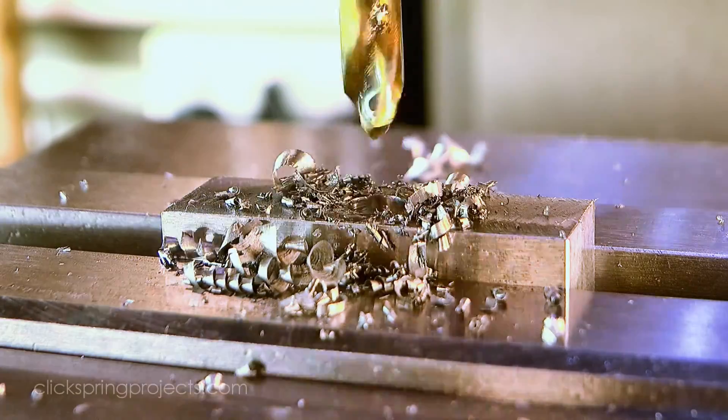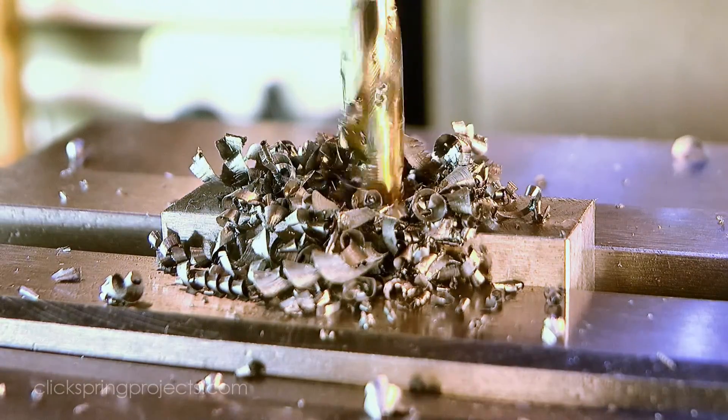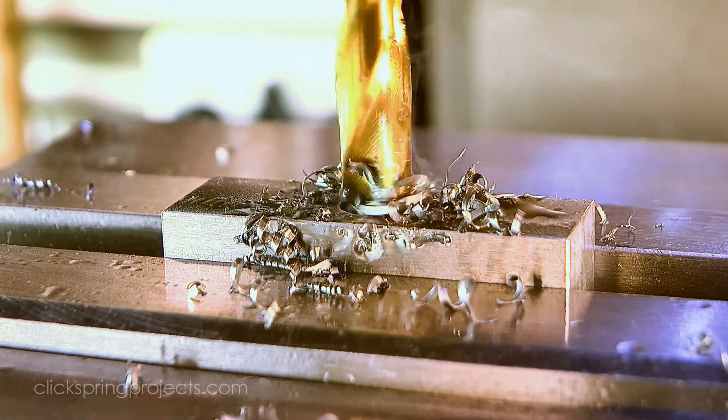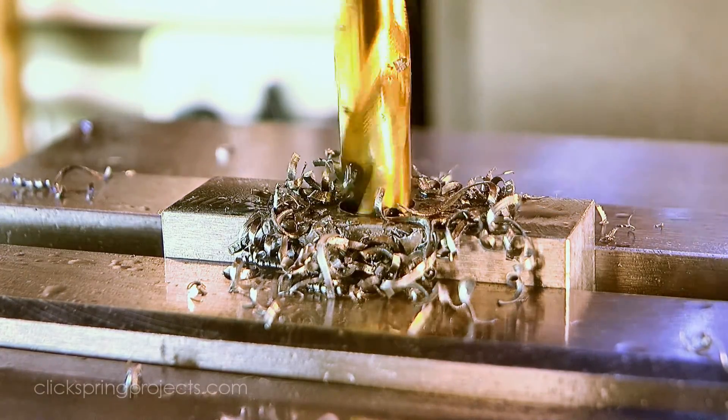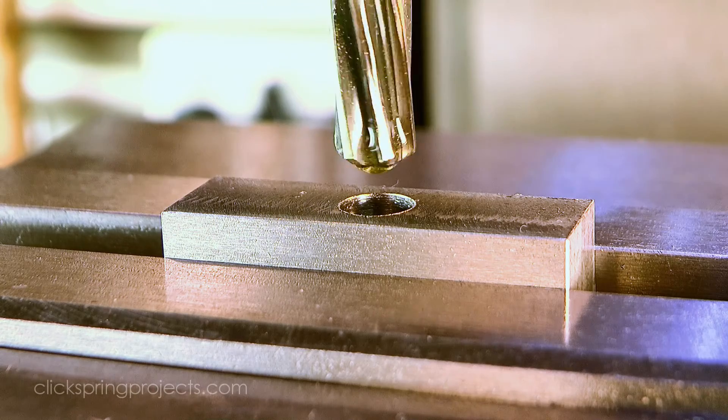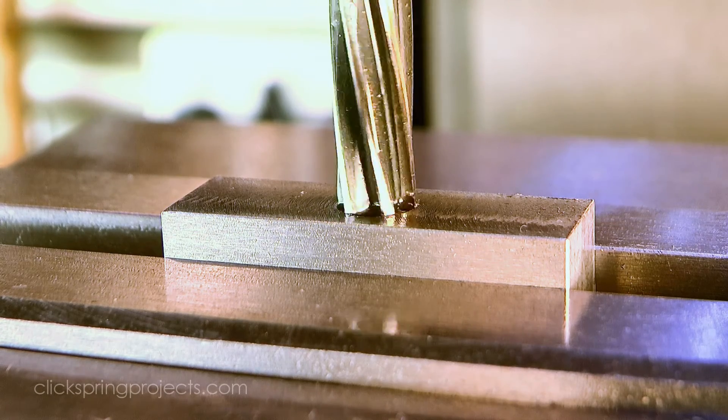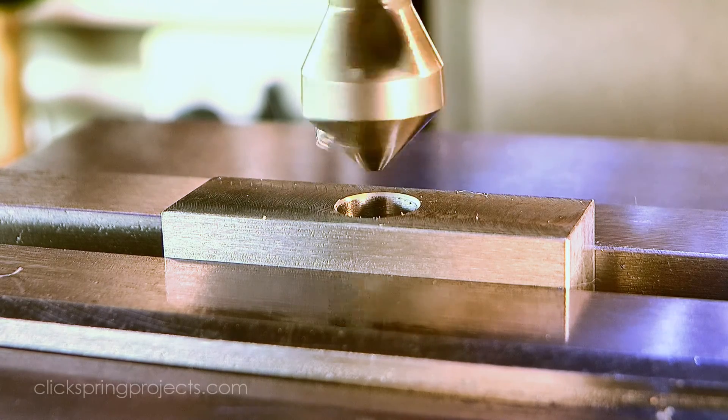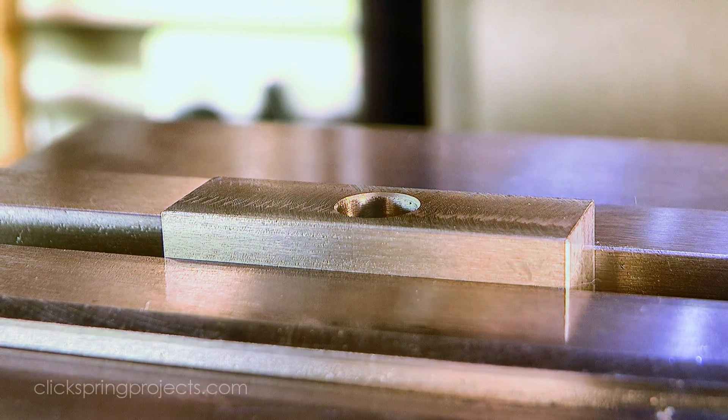With the spindle positioned, I opened up the central hole, slightly undersized, and then used a reamer to bring it to final dimension. A quick deburr of the hole, and I can move on with putting in the other features.